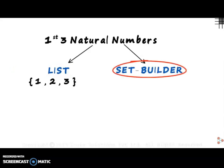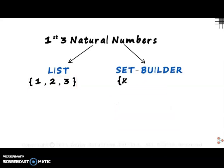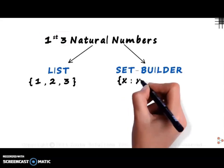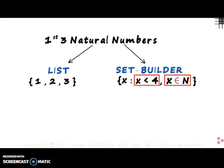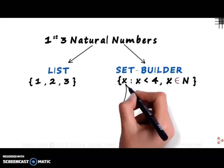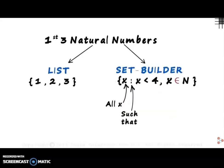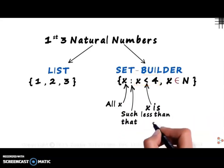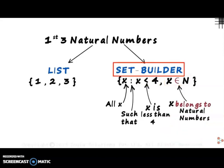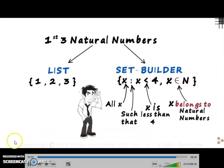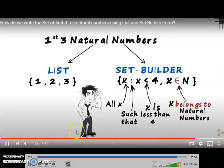How do we represent it using the set builder method? We can represent this set as the set of all x. Since we need the first three numbers, the first condition is x is less than 4. We also need the numbers to be natural, so we add a second condition: x belongs to natural numbers. Every number satisfying these two conditions is included in the set. The colon means 'such that.' This method is not a favorite among students because they think it's complicated, but in coming videos we will show how powerful the set builder method is.